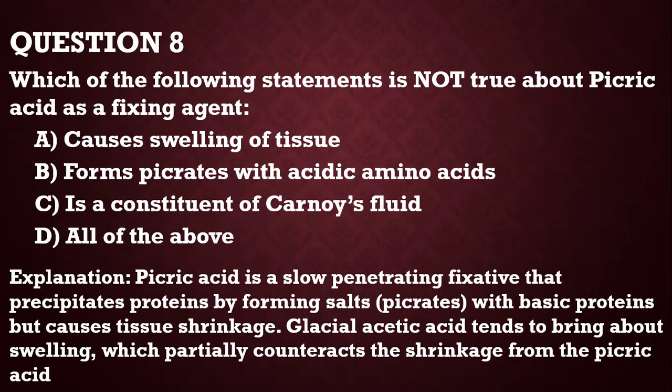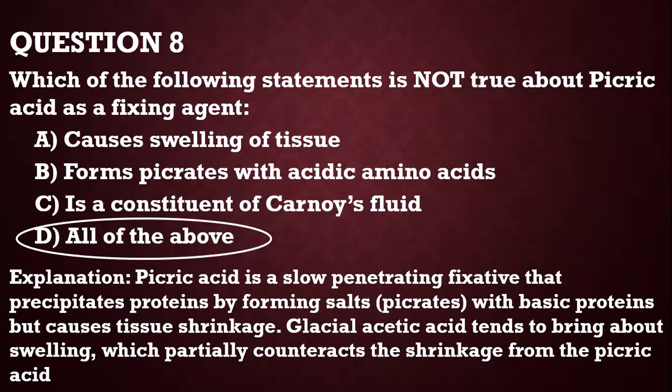Question number 8: which of the following statements is not true about picric acid as a fixing agent? It causes swelling of tissue, forms picric acid with acidic amino acids, and is a constituent of carnoid fluid — all these are not true, so: all of the above. Picric acid actually precipitates proteins by forming salts with basic proteins and causes tissue shrinkage. That is why wherever it is used for fixation, glacial acetic acid is also added to bring about swelling and partially counteract the shrinkage. And it's certainly not a constituent of carnoid fluid.